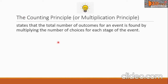Let us study the counting principle, sometimes called the multiplication principle. The counting principle states that the total number of outcomes for an event is found by multiplying the number of choices for each stage of the event.